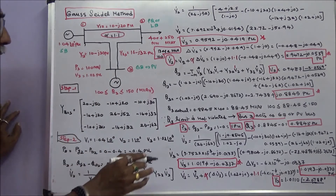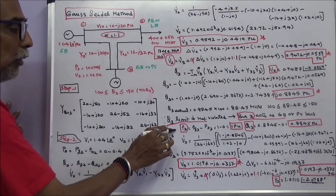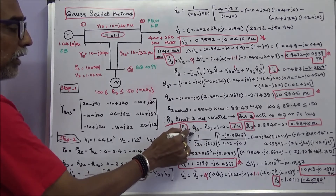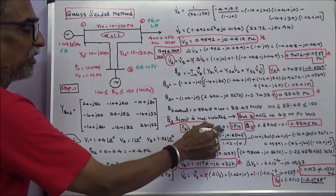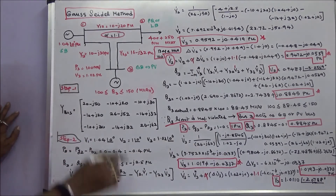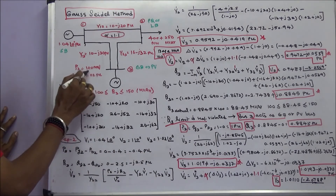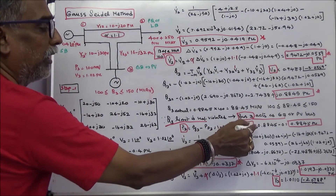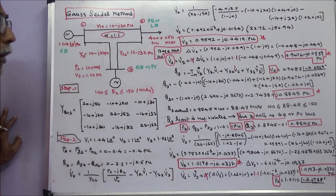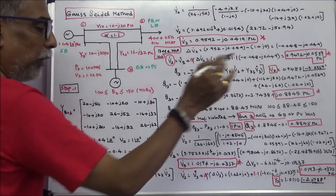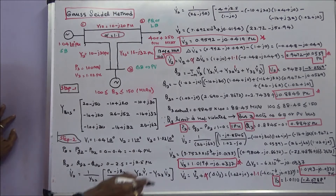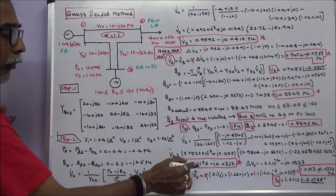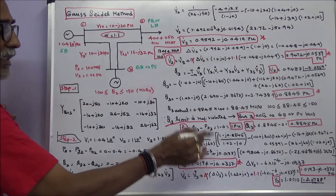Now we calculate P3. P3 = PG3 − PD3 = 1 − 0 = 1 per unit, since P3 is 100 MW and base is 100 MVA. Q3 = 0.8845 − 0 = 0.8845 per unit. Now we can calculate V3, which gives V3 = 1.0194 − j0.0337 per unit.